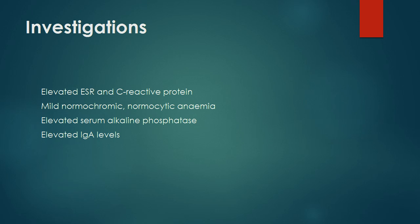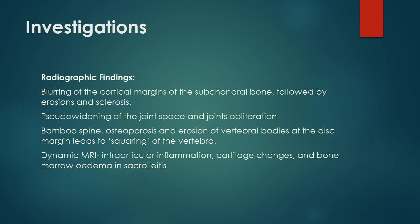Investigations: Elevated ESR and C-reactive protein; mild normochromic, normocytic anemia; elevated serum alkaline phosphatase; elevated IgA levels. Radiographic findings include blurring of the cortical margins of the subchondral bone, followed by erosions and sclerosis. Erosions lead to pseudo-widening of the joint space, and later the joints may become obliterated with bony ankylosis. X-ray of the spine shows the characteristic bamboo spine appearance and ossification of interspinous ligaments. There is diffuse osteoporosis of the vertebral column. Erosion of vertebral bodies at the disc margin leads to squaring of the vertebra. Dynamic MRI is highly sensitive and specific for identifying intra-articular inflammation, cartilage changes, and bone marrow edema in sacroiliitis.